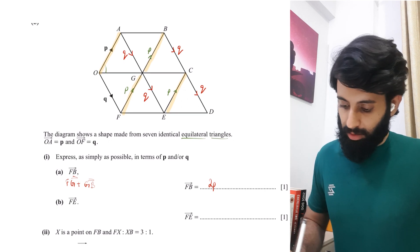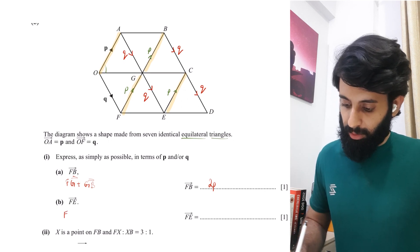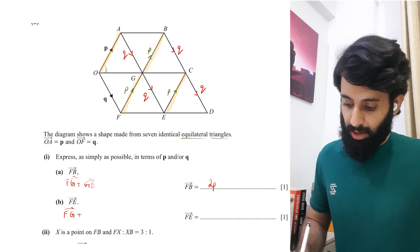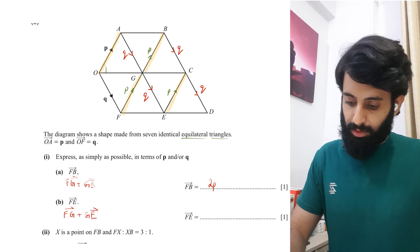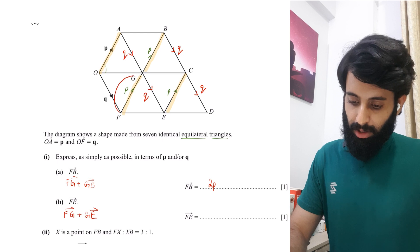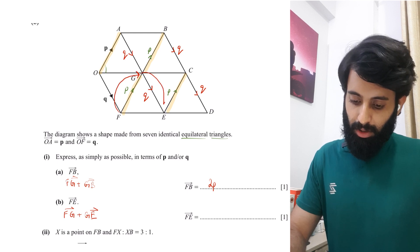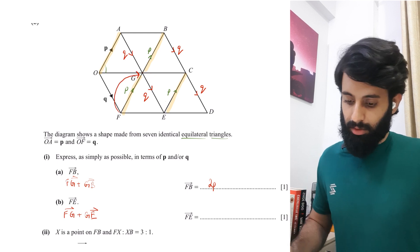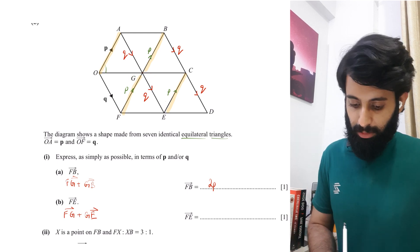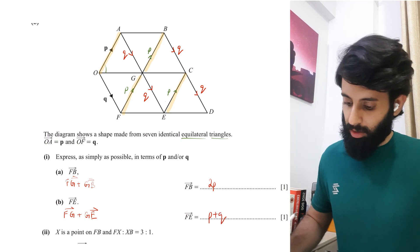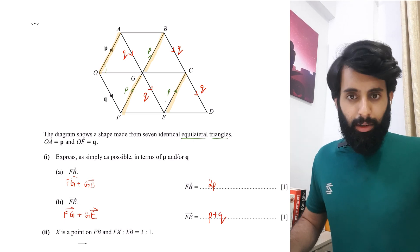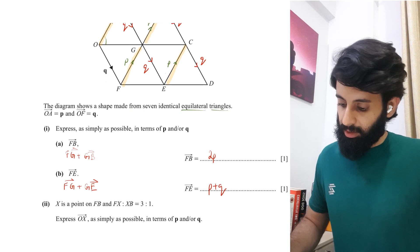Next, FE. In order to go from F to E, we go from F to G and then from G to E. F to G is positive P, and G to E is positive Q. So in simple terms, it's going to be P plus Q. Easy.